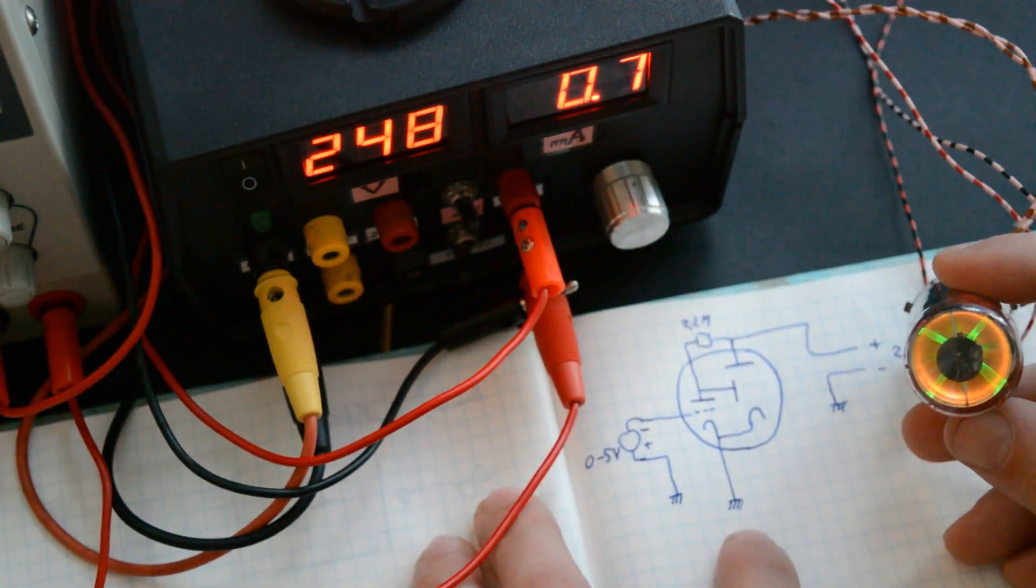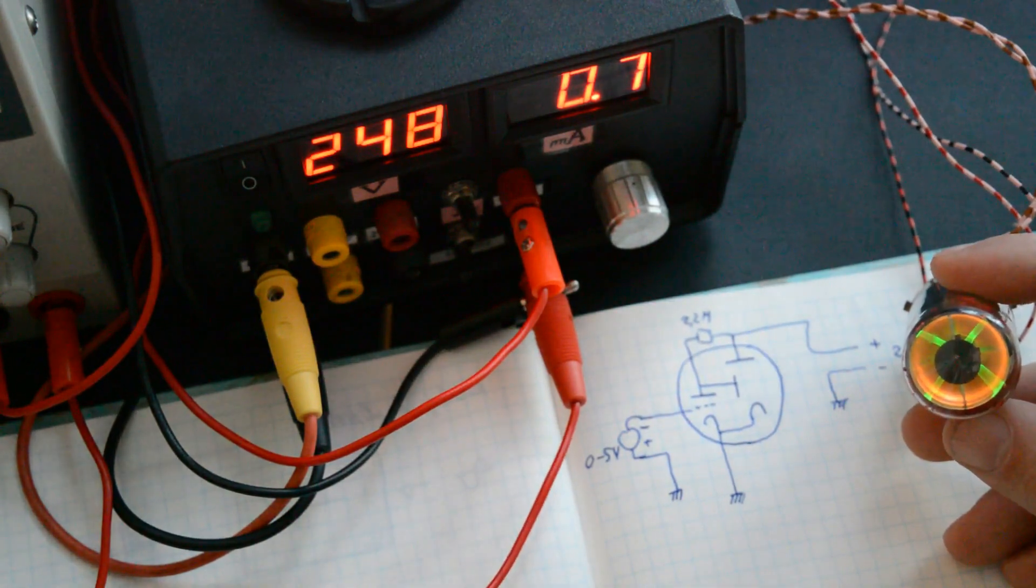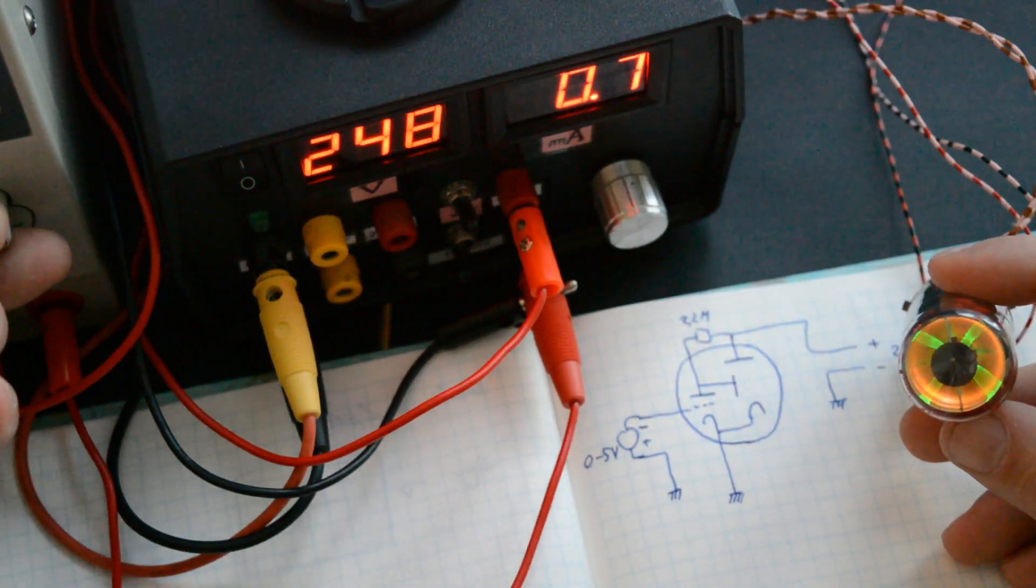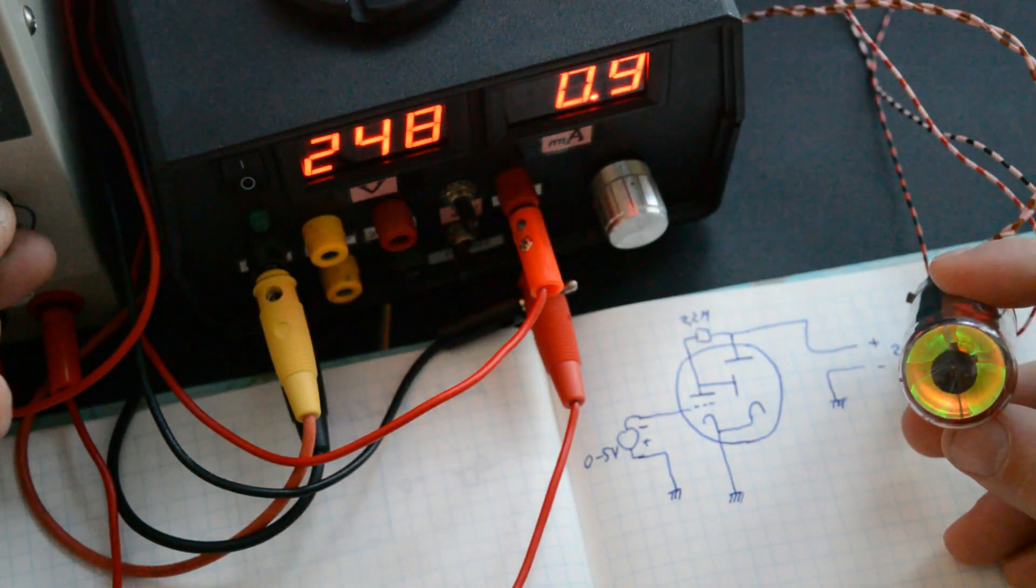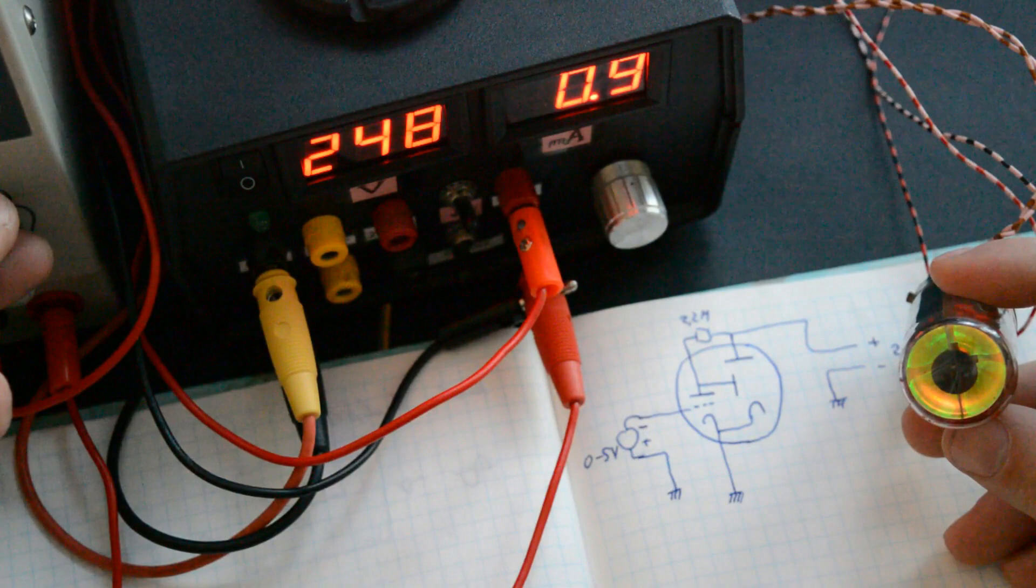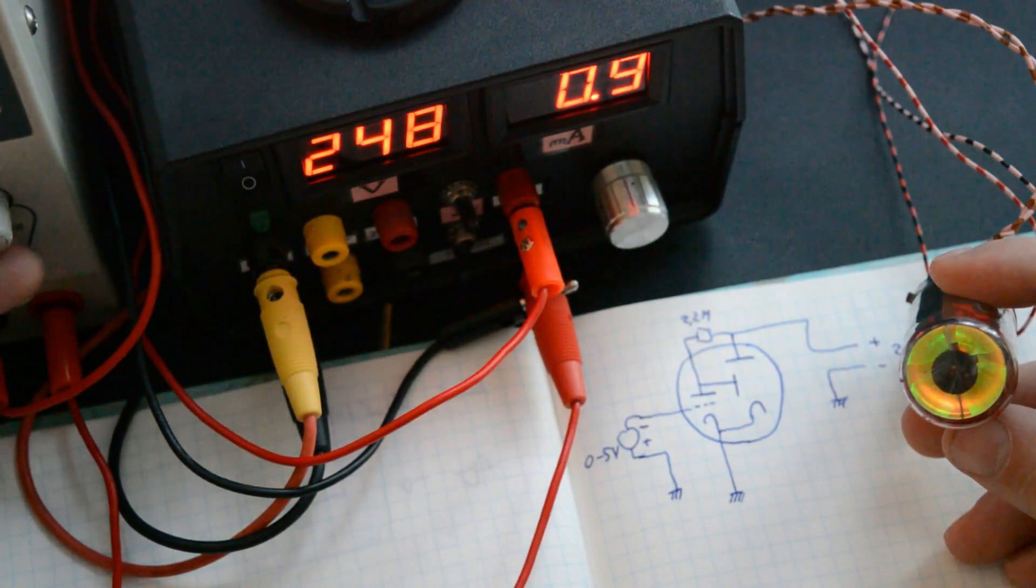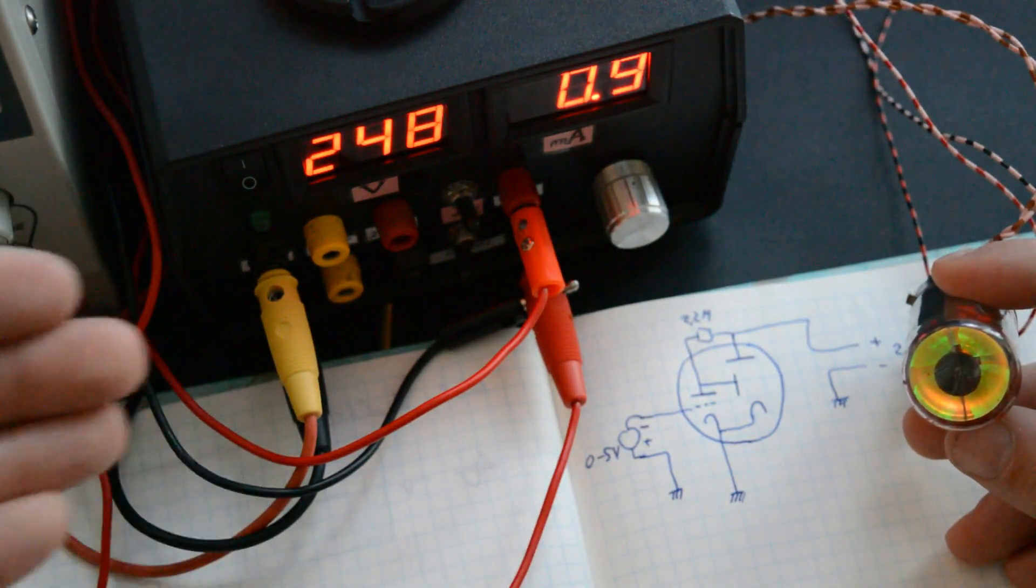Right now, I'm giving it 0 volts. Watch what happens when I increase the signal to it. You can see that slowly, the green area is increasing and increasing and increasing. This is showing us, if it would be in a radio, that the signal is becoming stronger and stronger.